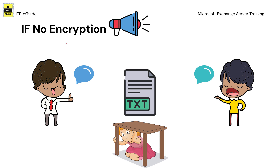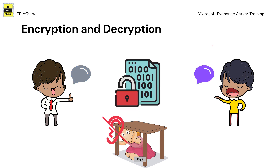The internet is a connected world — you are connected to many other people and we use a common channel to communicate. When you communicate with another party over the internet without any encryption, the chance of getting your data exposed to wrong hands is very high, because you are communicating in plain text and it is easy for someone who intercepts to read and understand what you are communicating. But once encryption and decryption are involved, the data that starts from your endpoint gets encrypted.